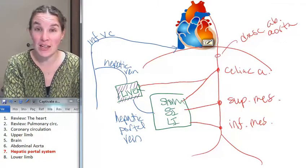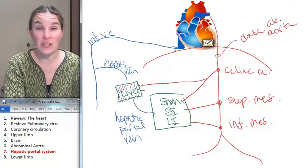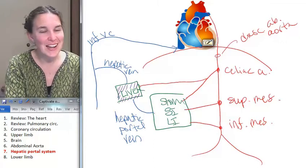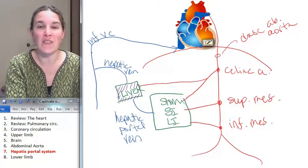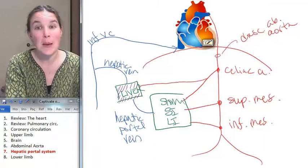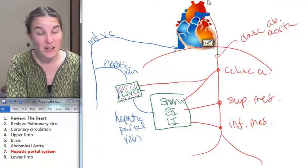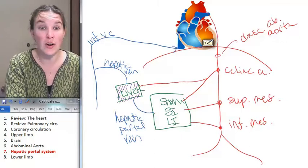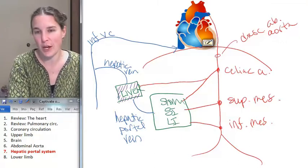The hepatic vein takes the old blood. It's been filtered, has a lot of nutrients in it, and sends it to the inferior vena cava where it goes up to the lungs to get new oxygen, back to the left side of the heart, and out to the body where it will deliver all those great nutrients that it picked up to the body.